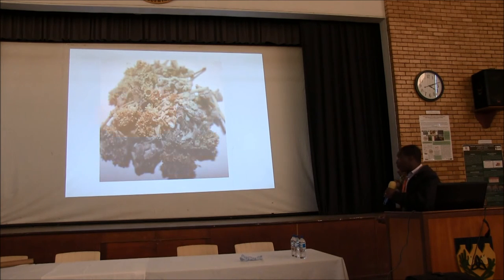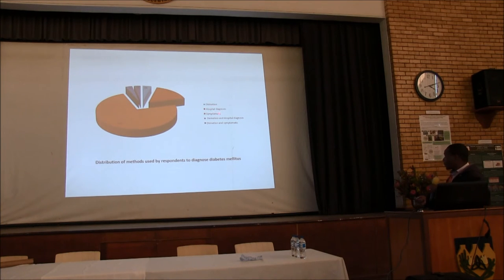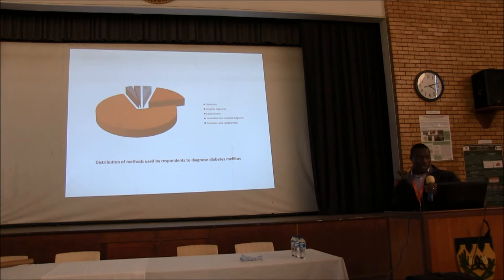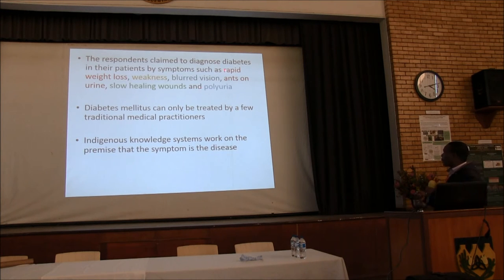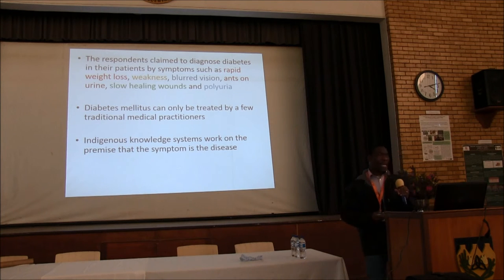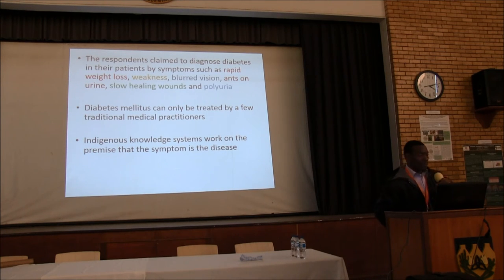This chart shows the distribution of methods used by respondents to diagnose diabetes. Some would say variation, some would say hospital diagnosis, some would use symptomatic observation, and some a combination. As you can see, 73% is mostly symptomatic. Symptoms include rapid weight loss, weakness, blurred vision, and they would even check whether ants visit their urine, indicating sugar accumulation. Slow-healing wounds and excessive urination were also noted.